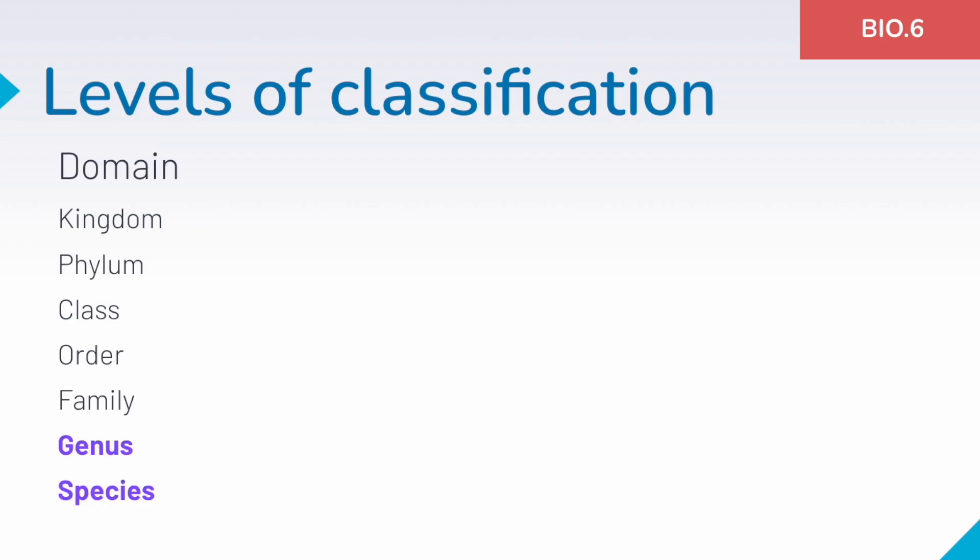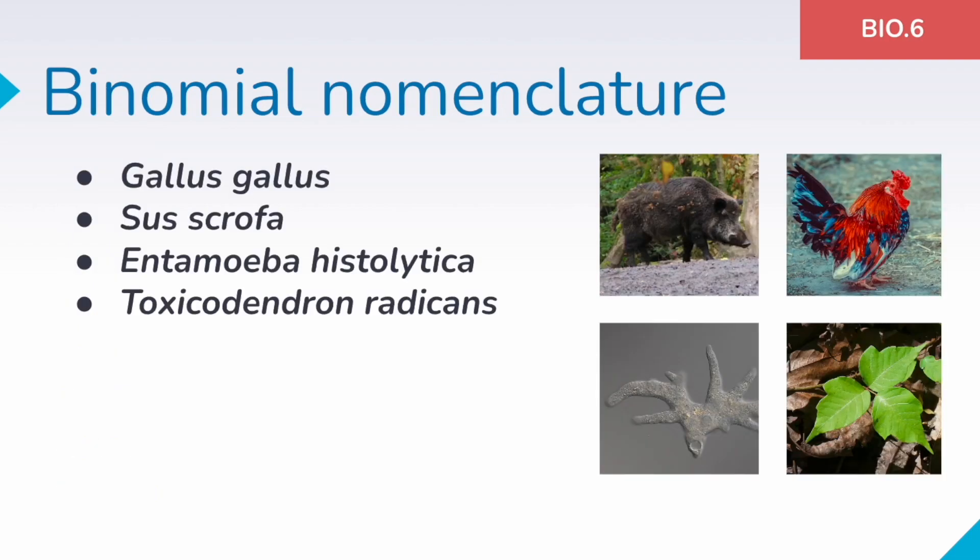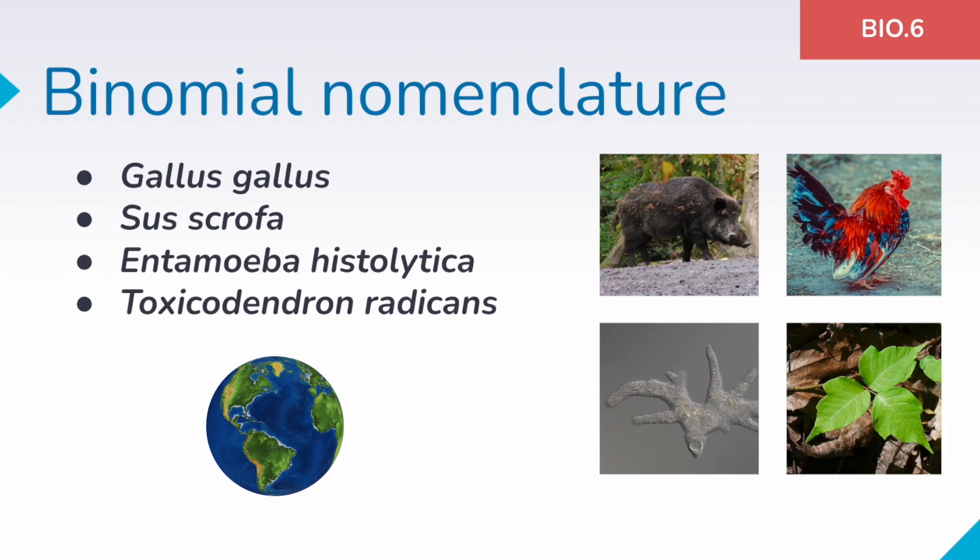Genus and species are the two most specific categories for the most part. Sometimes we can have a subspecies. We use these two categories to create the scientific name for an organism. A scientific name follows the binomial nomenclature format and every organism ever discovered is given a scientific name that is two words. The first word comes from the genus group and the second word comes from its very specific species group. So it's always two words, unless we have a subspecies, and it's always kind of Latin sounding, always in italics. The first word is capital and the second word begins with a lowercase letter. Some common organisms: Gallus gallus, that's a chicken. Sus scrofa, that's our boar. Entamoeba histolytica, that's an amoeba. And Toxicodendron radicans, that is poison ivy.